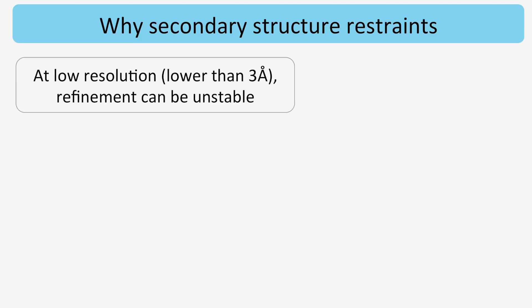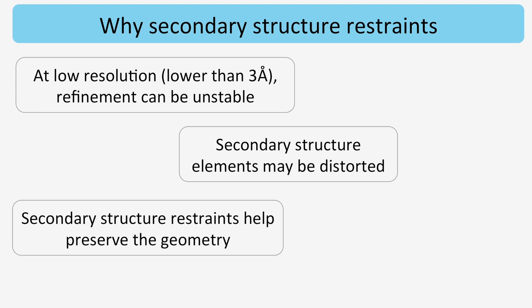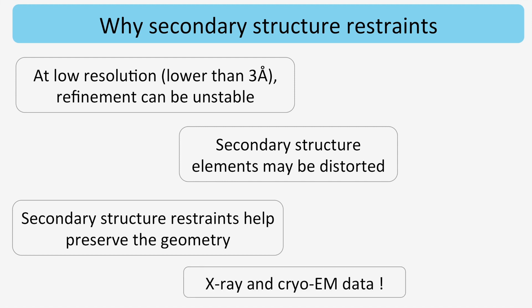At resolutions lower than about 3 angstrom, refinement of coordinates may be unstable. In particular, secondary structure elements may be distorted. However, using specifically designed secondary structure restraints may help preserving their geometry, and slightly distorted elements might be corrected. Note that this applies to refinement against X-ray or cryo-EM data.